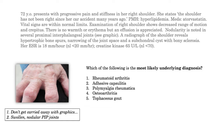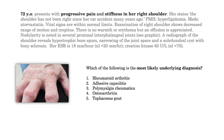My rule of thumb is this: if you can make a diagnosis from the graphic, great, but that's not usually the case. Here I see swollen, nodular, or enlarged PIP joints. These could be tophi, osteoarthritis, or perhaps rheumatoid nodules. But it isn't a slam dunk, so let's move on to the vignette.